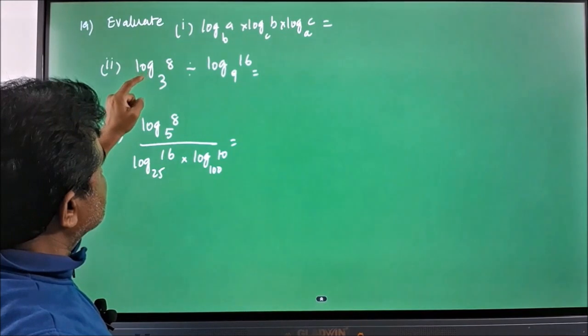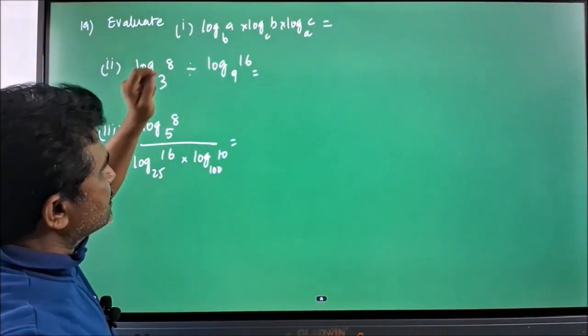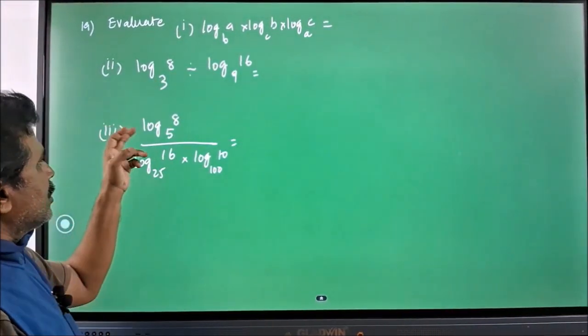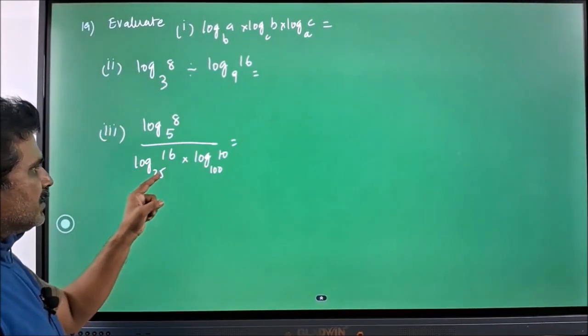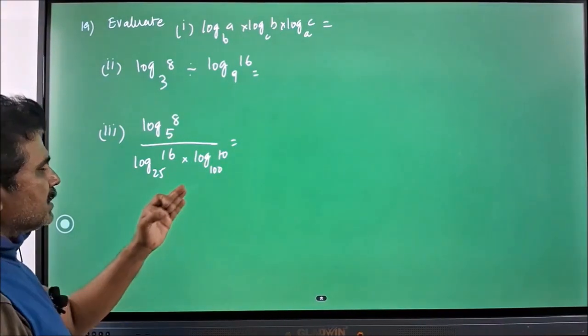And then log 8 to the base 3 divided by log 16 to the base 9. And then log 8 to the base 5 whole divided by log 16 to the base 25 into log 10 to the base 100.